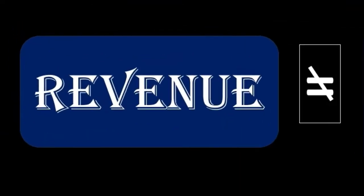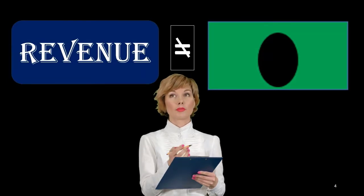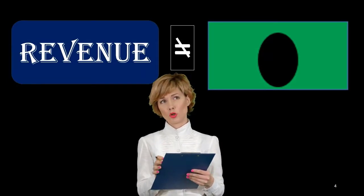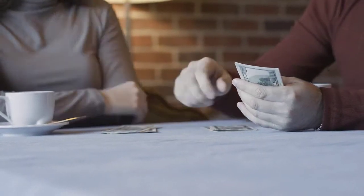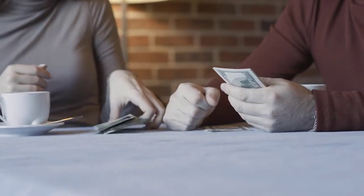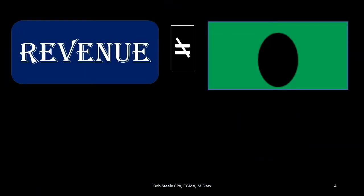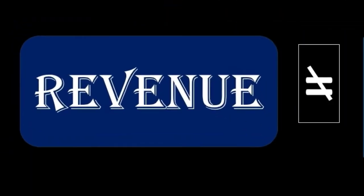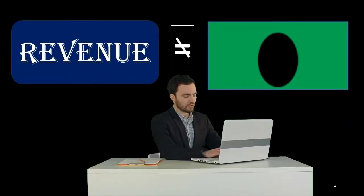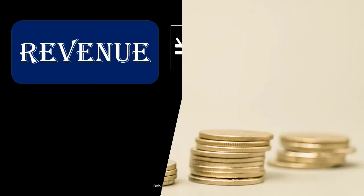Cash is not revenue, and revenue is not cash. Revenue represents what has been earned; cash represents one form of payment. We can get paid in some other way while still earning revenue — for example, if we did work and received a barter system, some other form of compensation like services, a car, or health insurance benefits. Those are other forms of payment we can receive while earning revenue.